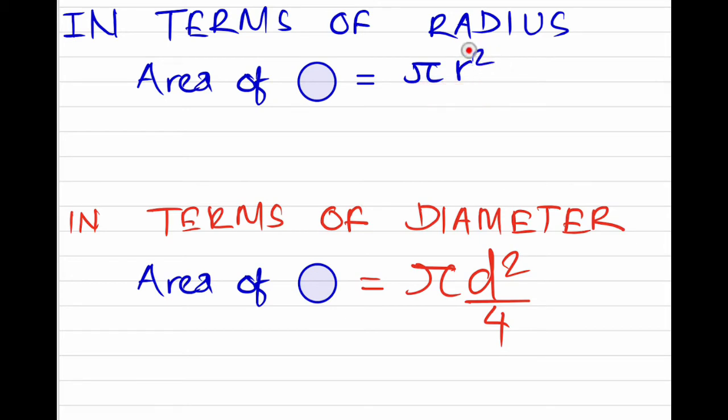Since we have the r² term, the unit of area is always in square units. If the radius is in centimeters, it's in centimeters squared. If it's in meters, it's meters squared.